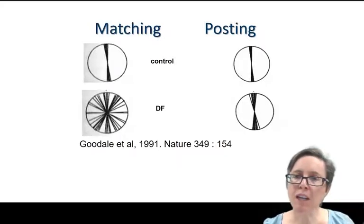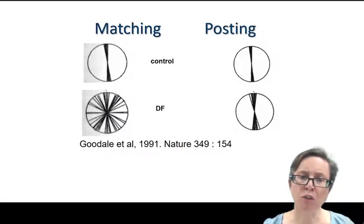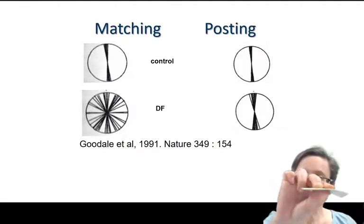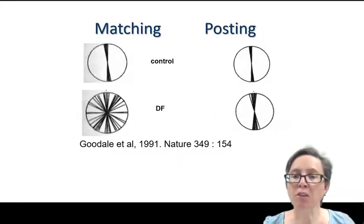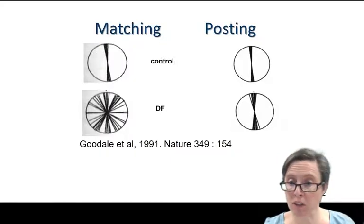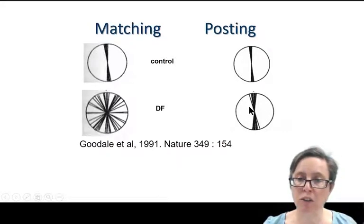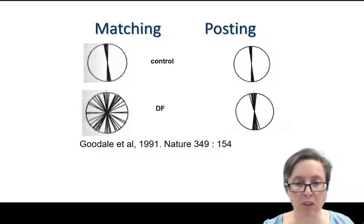But there's a really intriguing result on the other side. David Milner and Mel Goodale then asked DF to post her card through the slot, as if it were a letterbox. Measuring the orientation of the card as it approached the slot in her hand, the errors were far less — she never made those huge errors. She automatically oriented the card correctly with her hand, even though she had no conscious awareness of the orientation of the slot.